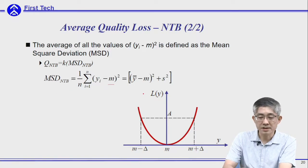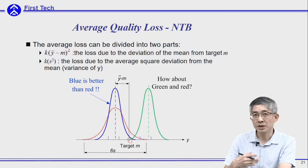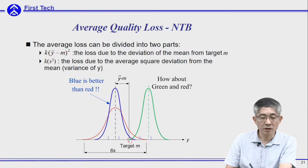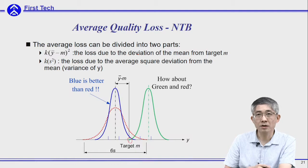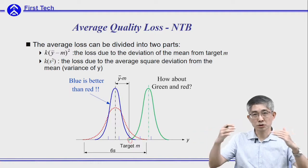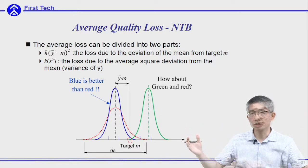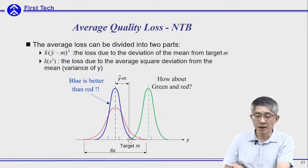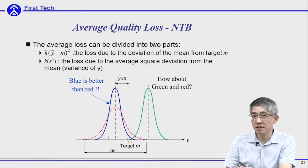Looking at the MSD, you can see there are two parts. For example, this is your target and the blue line is your output. The first part of the average quality loss is associated with the difference of the mean to the target, (y-bar minus m). The second part is associated with s squared, which is related to your distribution quality. If your standard deviation is large, your distribution spans a wider range, and the quality loss will be larger.